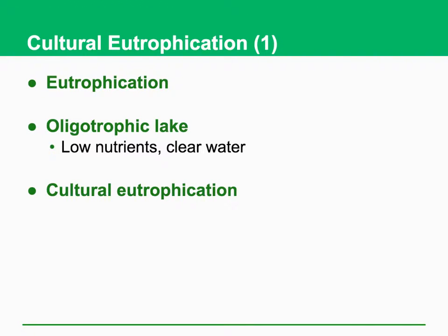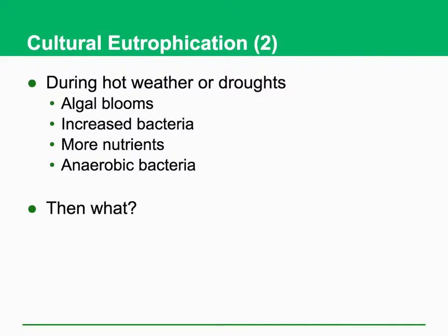As mentioned, eutrophication is a problem caused by nutrients such as nitrate and phosphate, and this can happen in many lakes due to excessive growth of algae. During hot weather or drought where water is not enough, algae blooms occur. We can also see increased bacteria, more nutrients, and we can find some anaerobic bacteria which cause very bad smells from the water.